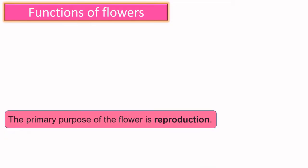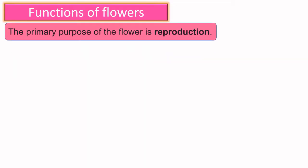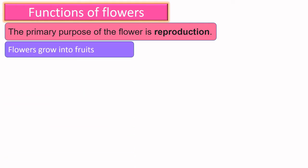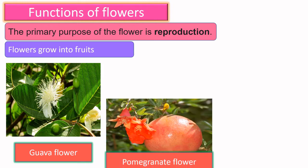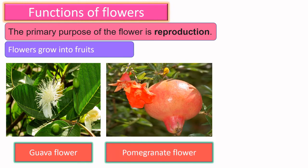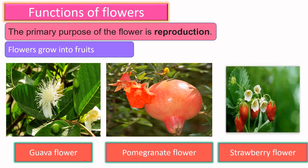Functions of flowers: the primary purpose of the flower is reproduction. Flowers grow into fruits — for example, a guava flower grows into a guava fruit, a pomegranate flower grows into a pomegranate fruit, and a strawberry flower grows into a strawberry fruit.